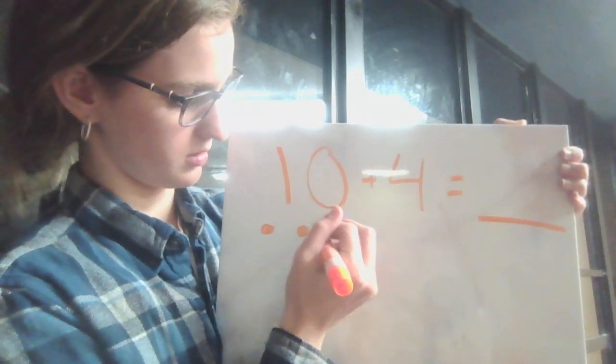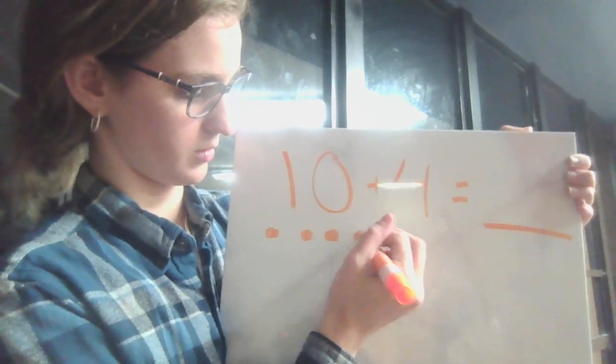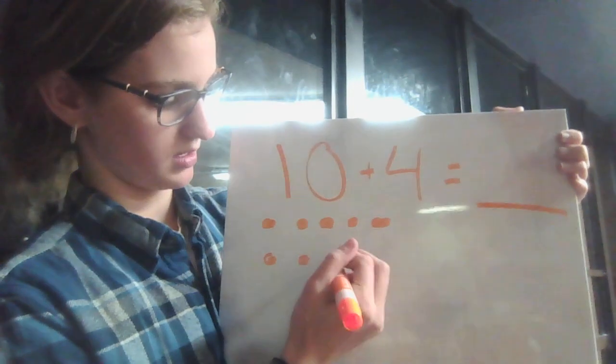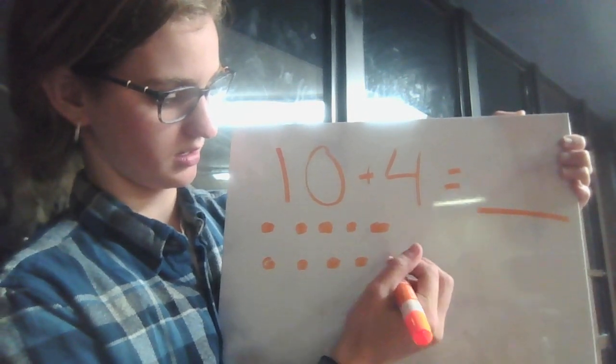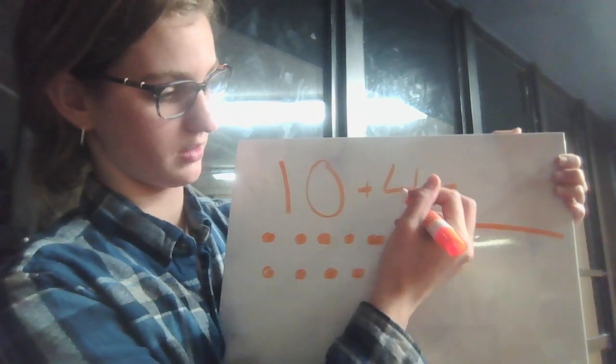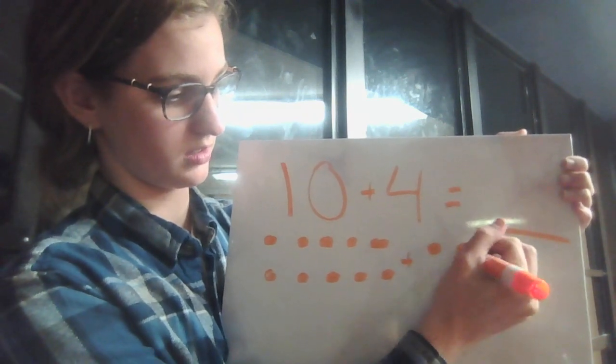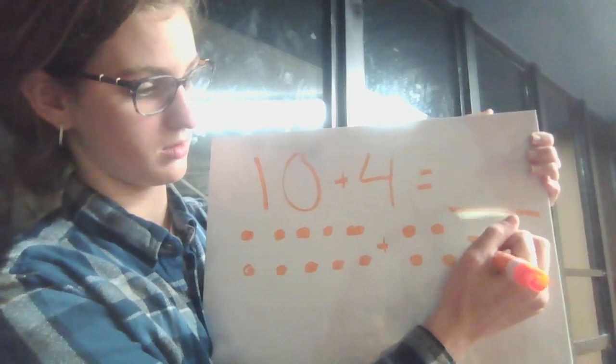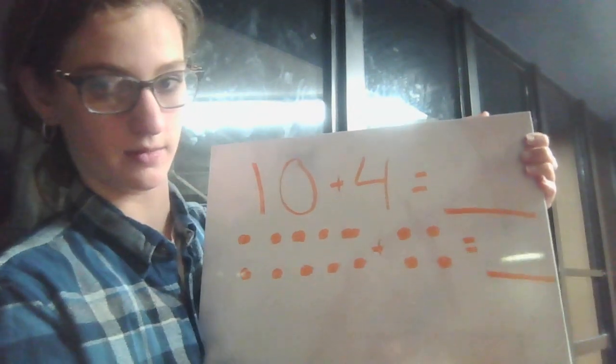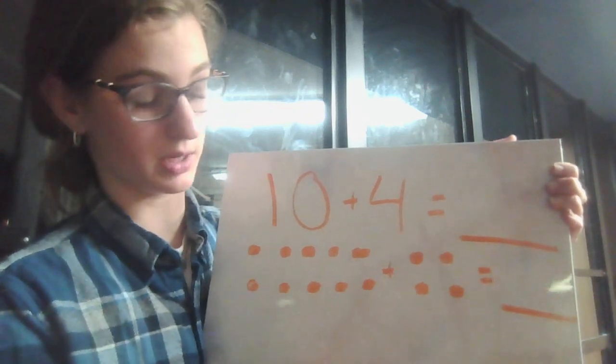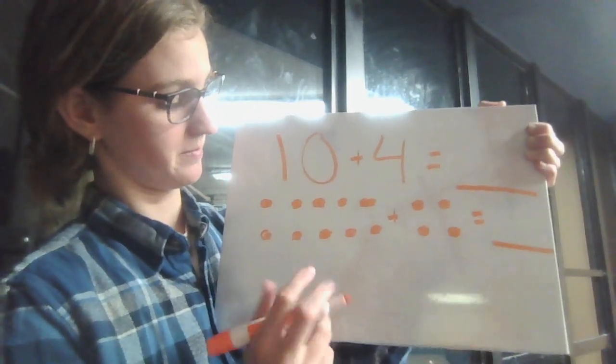So, we're going to add ten dots here, four dots here. One, two, three, four, five, six, seven, eight, nine, ten. Now, we're going to add the plus sign, and then the four dots. One, two, three, four. Don't forget the equals, and the line underneath. We might have to reverse that line to add the more dots, because it's a pretty big number for all these dots.